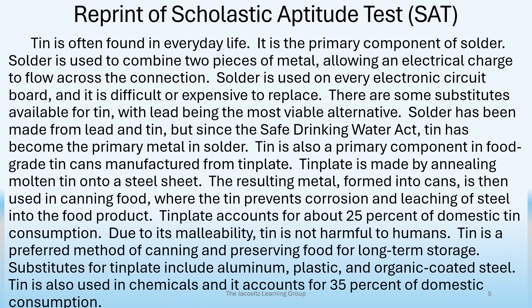Moving on — tin is found in everyday life. It is the primary component of solder. Solder is used to combine two pieces of metal, allowing an electrical charge to flow across the connection. Solder is used on every electronic circuit board, and it is difficult or expensive to replace. There are some substitutes available for tin, with lead being the most viable alternative. Solder has been made from lead and tin, but since the Safe Drinking Water Act, tin has become the primary metal in solder. Now we have another distinction — tin is expensive to replace when it's on solder. We have to decide whether we're talking about tin itself, or tin when it's used as a solder.